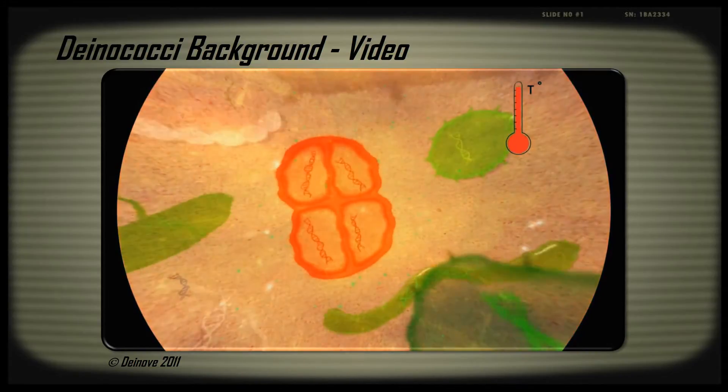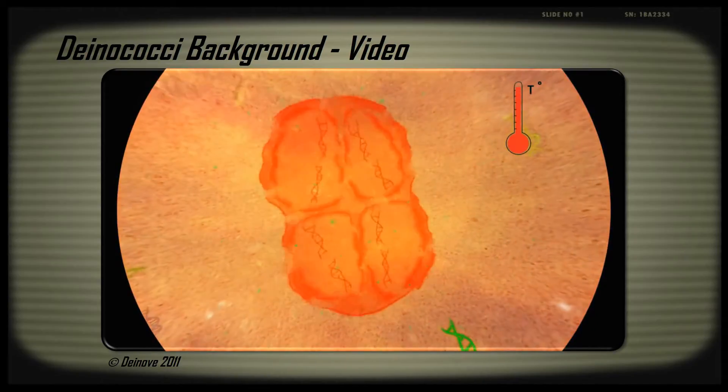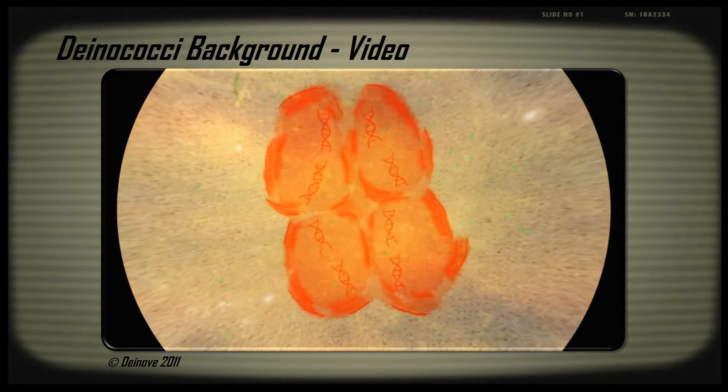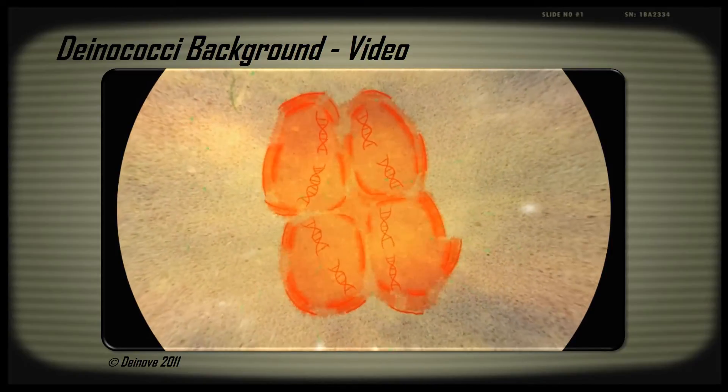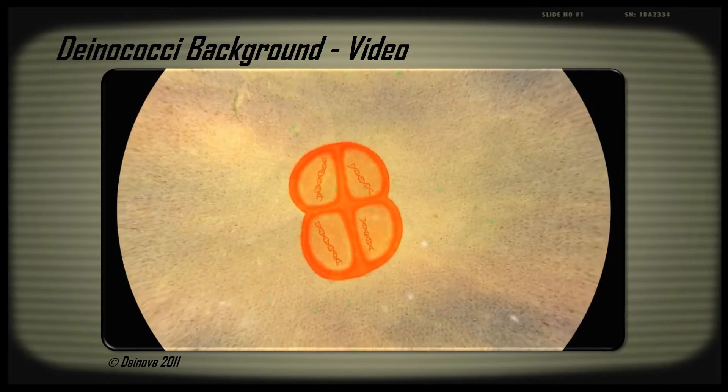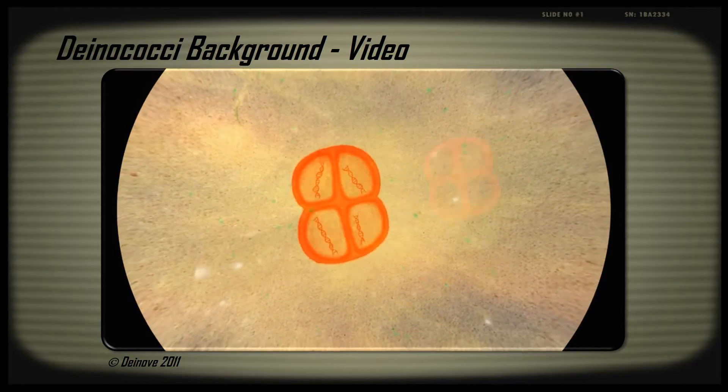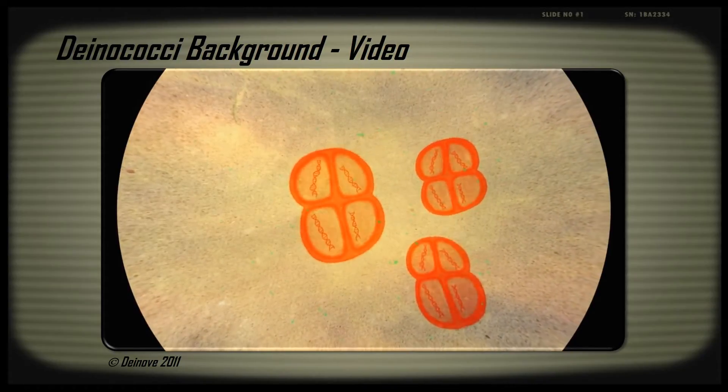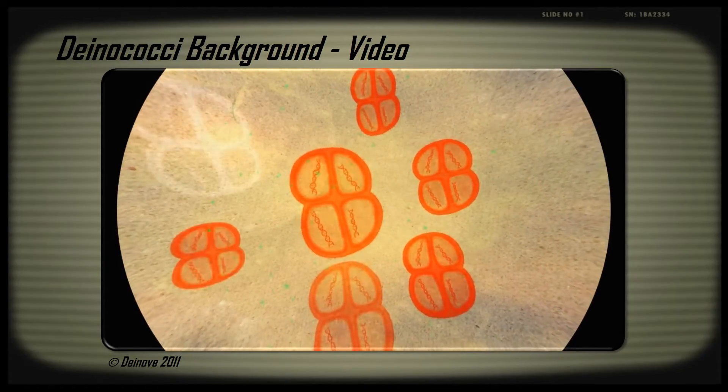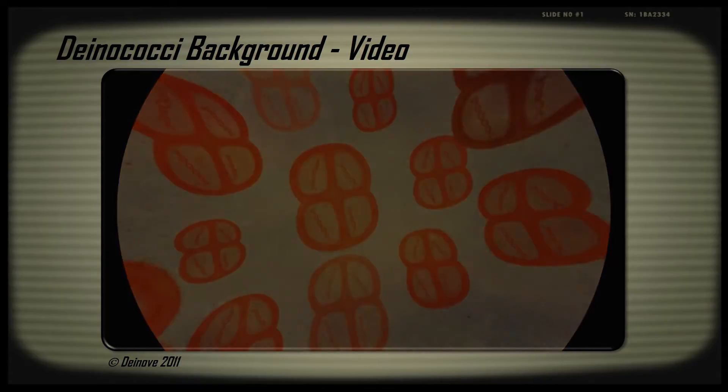However, when returned to normal conditions, the Deinococcus is able to stick together fragments of its broken DNA, putting them back into the right order. In less than three hours, the harmed bacteria return to life and start multiplying as normal. It's this hardiness, found in the Deinococcus, which makes it perfectly suited to industrial applications.